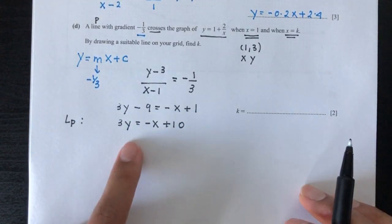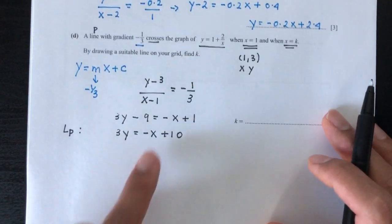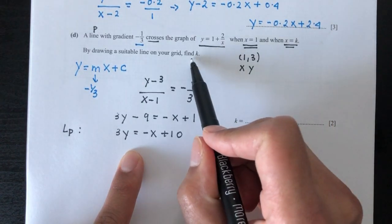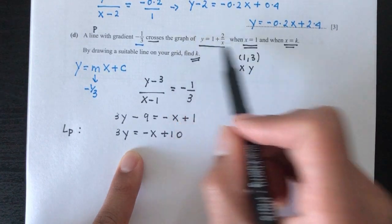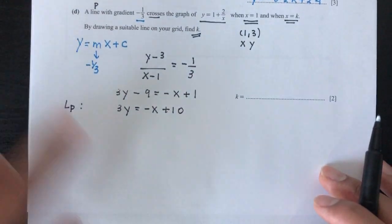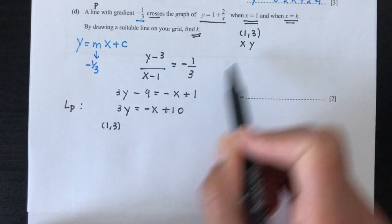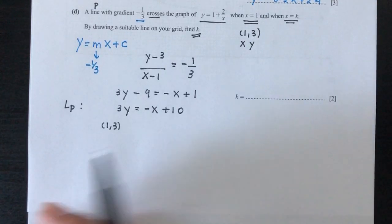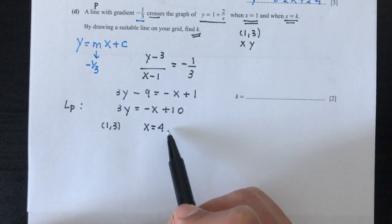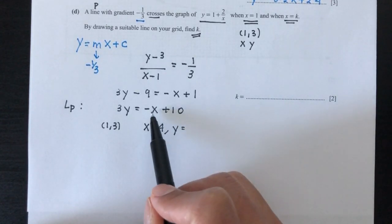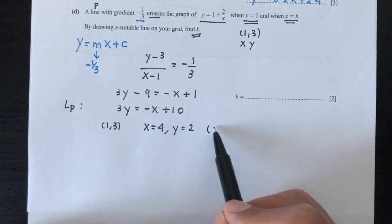So now we have to use this line, because it tells you here by drawing a suitable line on your grid, we have to draw this line on the grid to find the value of k. Now where is the value of k? The value of k is where this line will cut the graph at the other point. So let's do that. To draw a line, we have to have two points. One point we have is (1, 3) from here. What is the other point? Let's choose, for example, x equals 4. So y will be 2. So -4 + 10 will be 6, divide by 3, that should be 2. So the other point will be (4, 2). So now we have two points. We can draw your line on the graph.